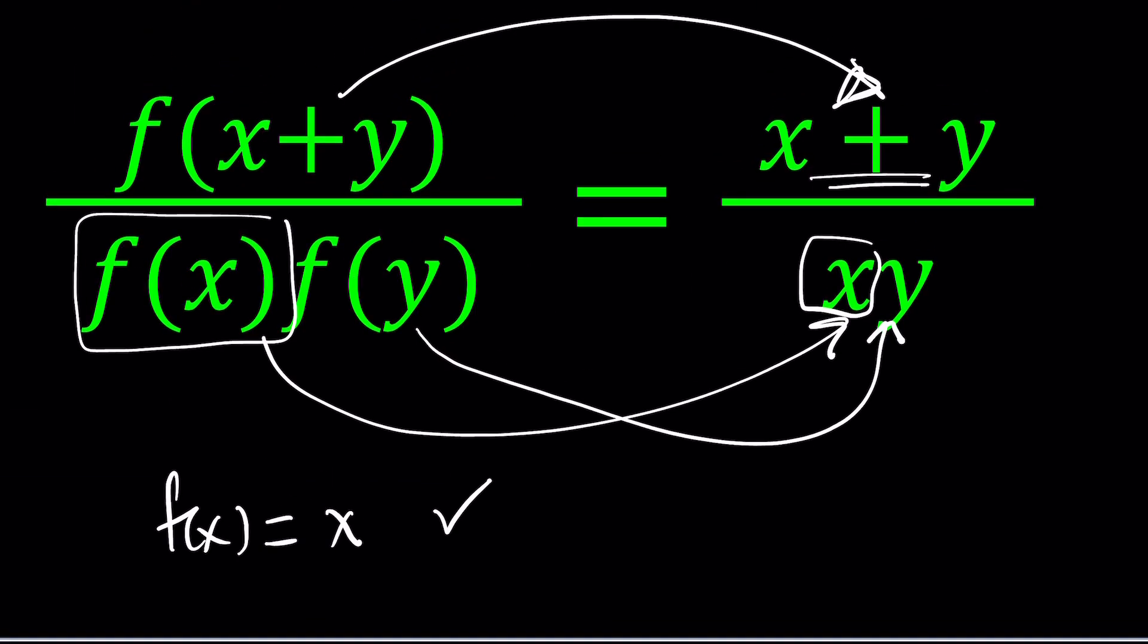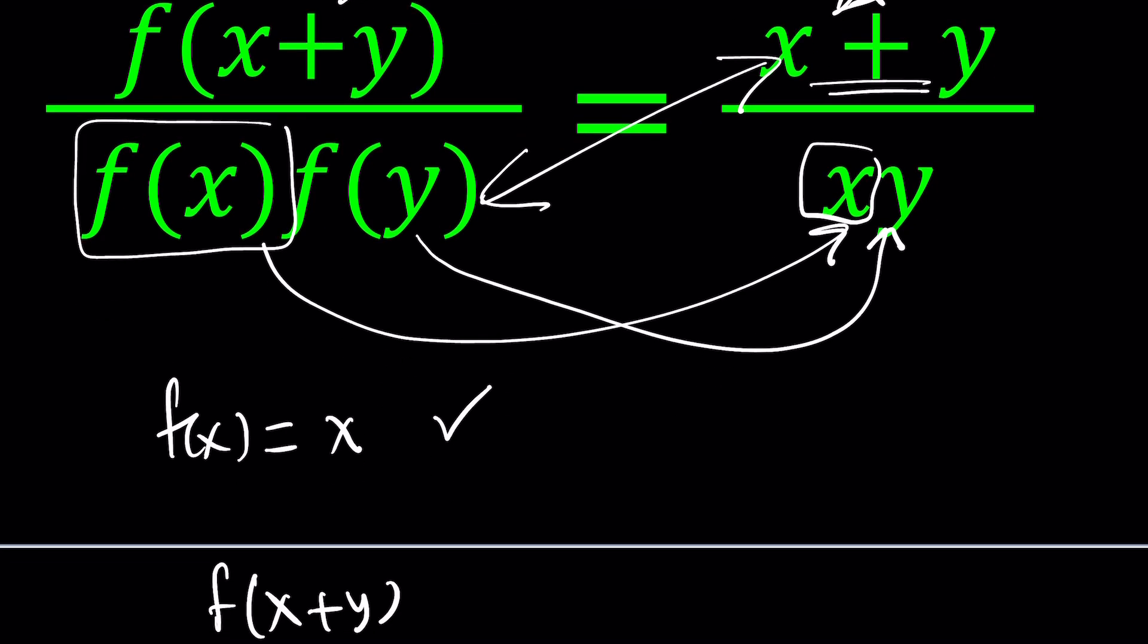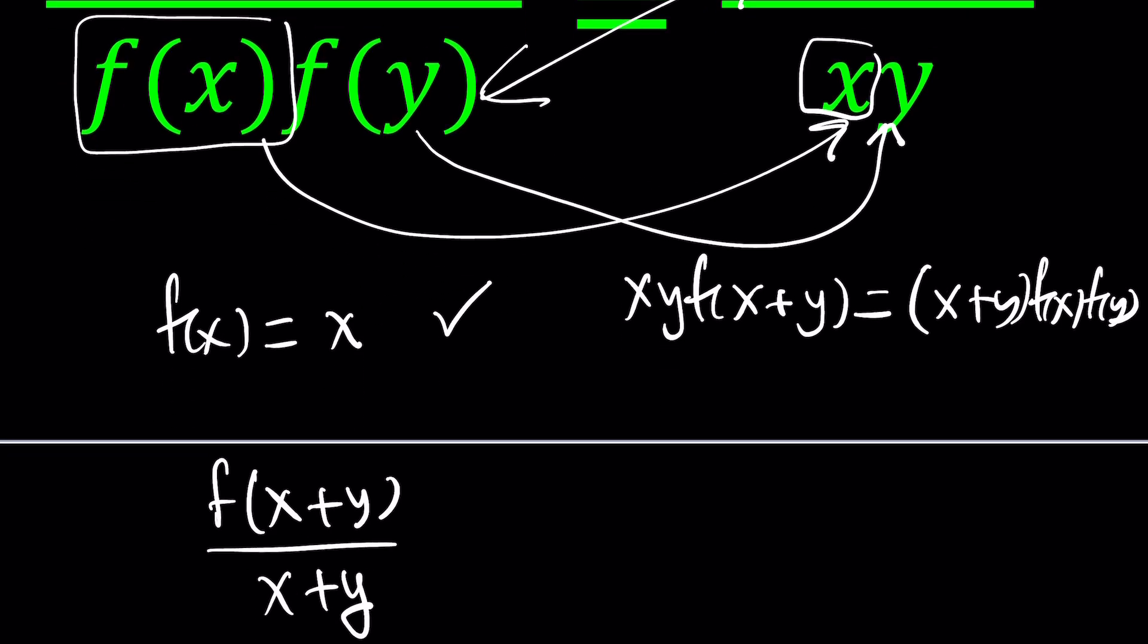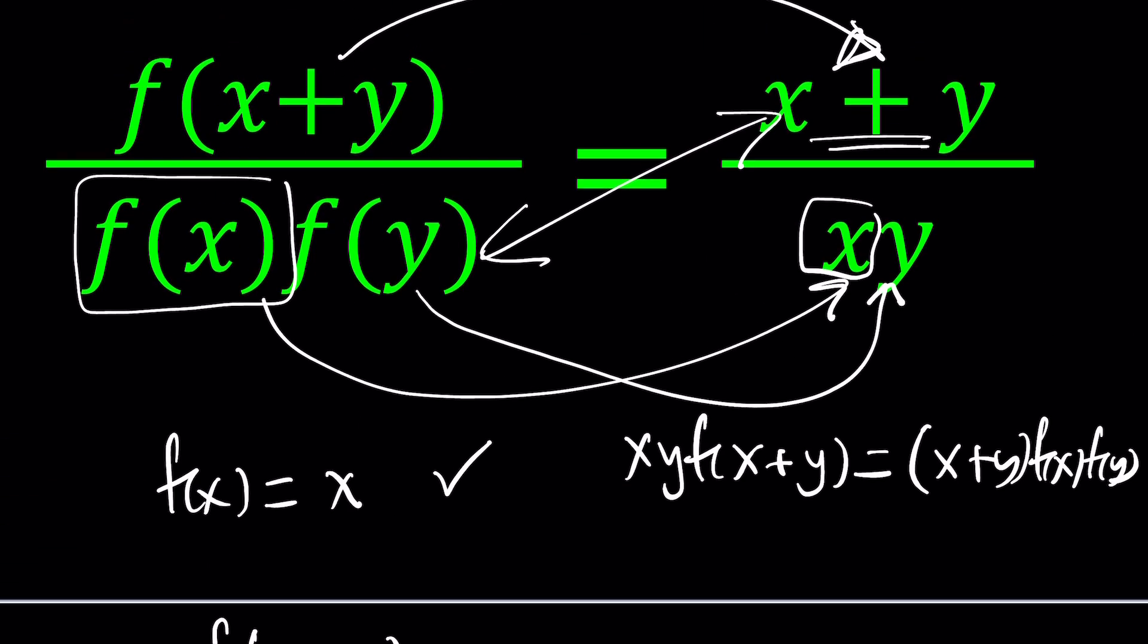And then, if you multiply both sides by f of x, f of y, the product, it's basically like this. These two things are being multiplied, like the cross products have to be equal. In other words, this implies that xy, f of x plus y equals x plus y, f of x, f of y. Of course, we have to be careful not to make, we have to make sure that x and y are not zero, f of x and f of y are not zero too. And, we can look at it towards the end why that's the case.